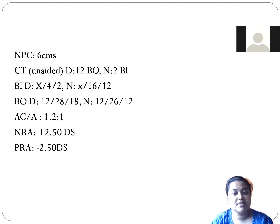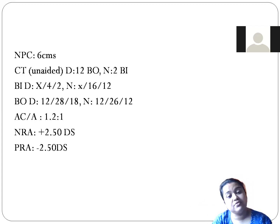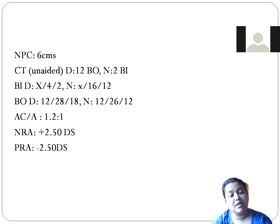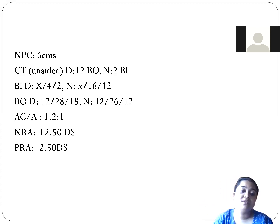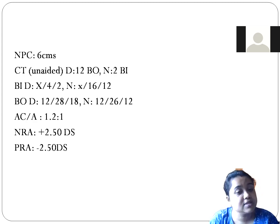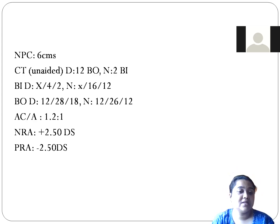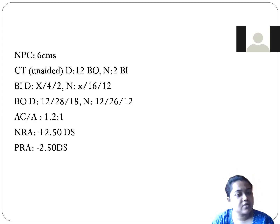Base-in values: for distance, x4/2 (blur at 4, recover at 2); for near, x16/12. The base-in value for distance is much less than normal. Base-out values for distance and near are actually more than normal. So the distance base-in (negative fusional vergence) is significantly reduced compared to near.